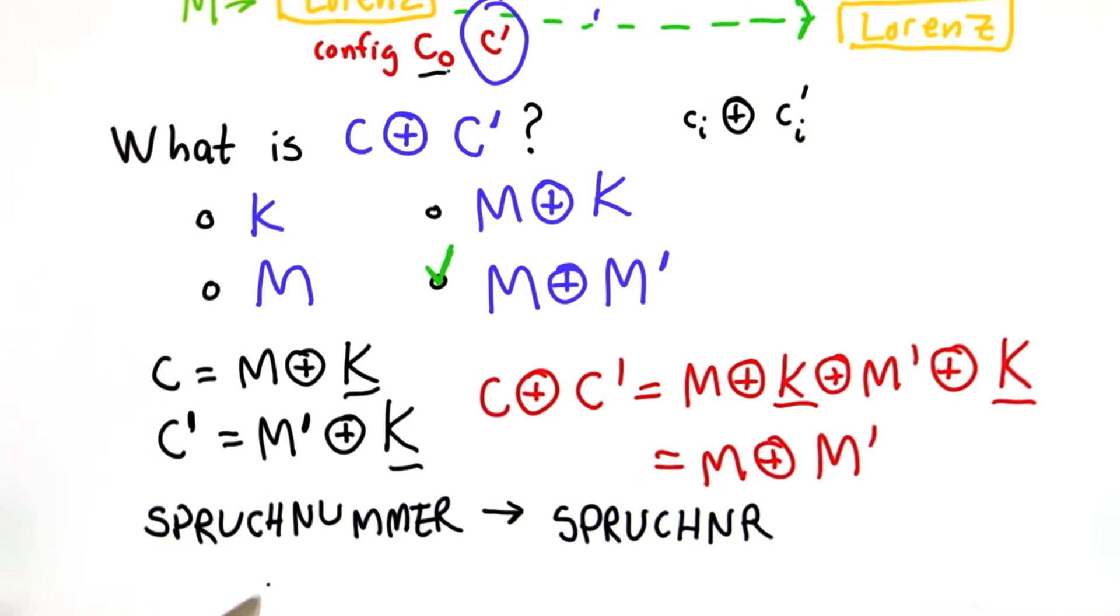And that would mean, well the places where the letters start to be different, we start to see differences between the ciphertext and the ciphertext prime. And unlike the key, which was pretty close to random, there were a lot of things you could guess about the messages.